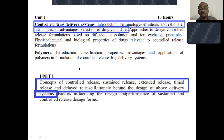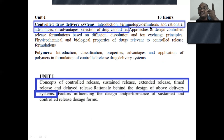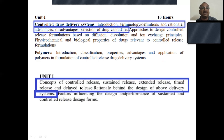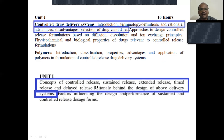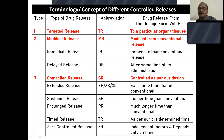The name of the subject is novel drug delivery system; the name of the chapter is controlled drug delivery system. We will cover: introduction, terminology, definition, rationale — reasons why this is better — advantages, disadvantages, selection of the drug candidate, and the concept of controlled release, including sustained release, extended release, timed release, and delayed release. The rationale behind the design of everything will be covered in this video.